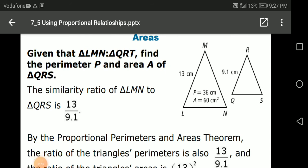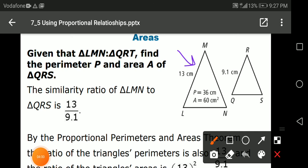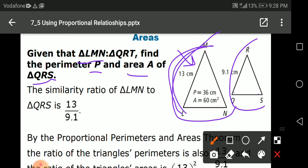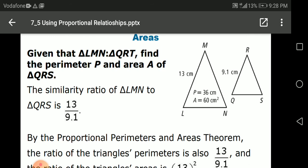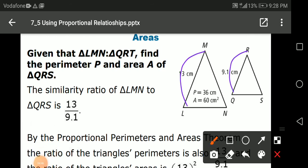We have here this example given. We have given triangle LMN, the ratio of triangle LMN to triangle QRS. Find the perimeter P and the area A of QRS. We have here two triangles. This is a very easy example. The two triangles here are similar. What is the first question I ask myself? What's the similarity ratio? How can I find it? LM over QR is the similarity ratio, 13 over 9.1.